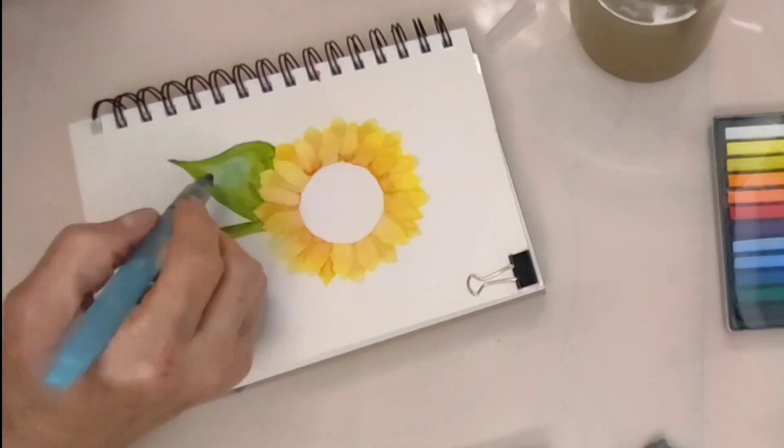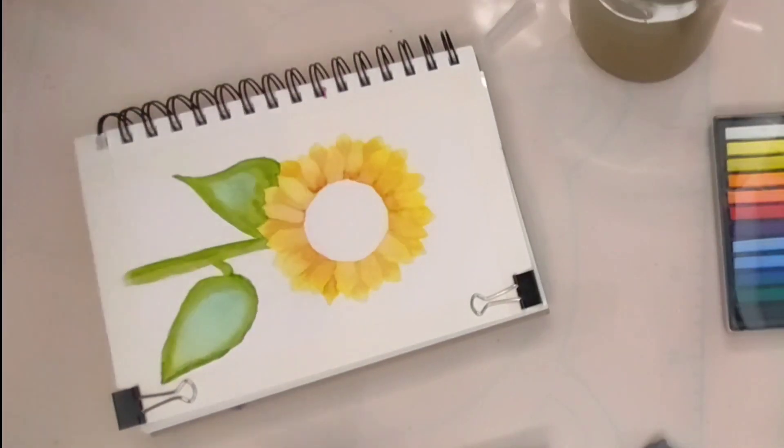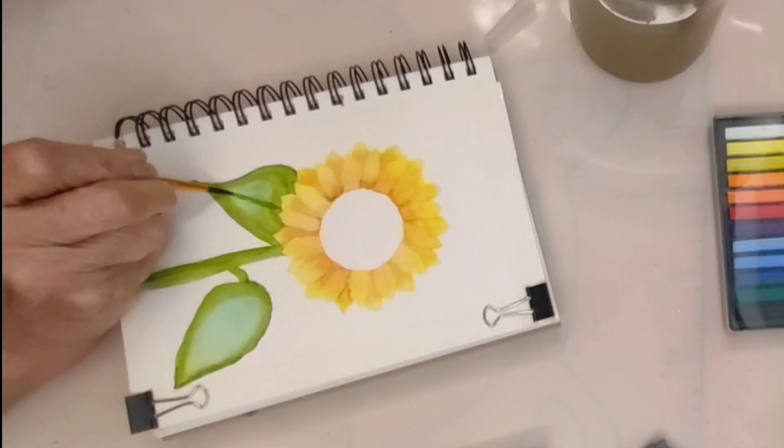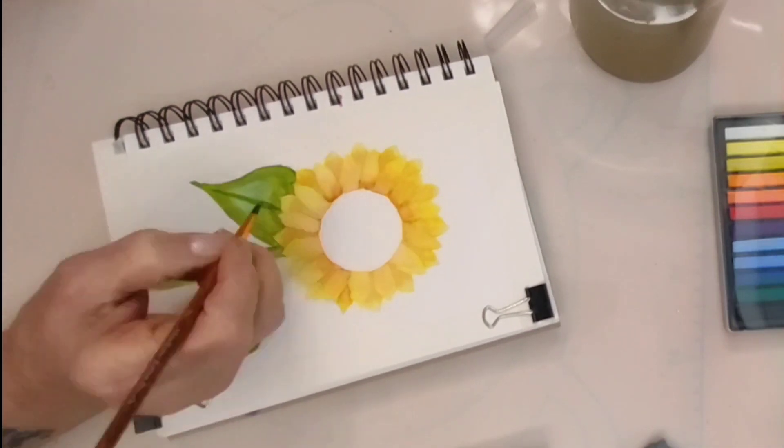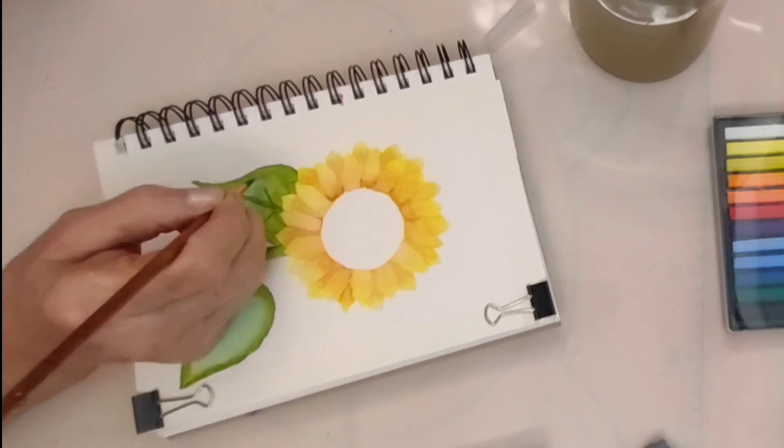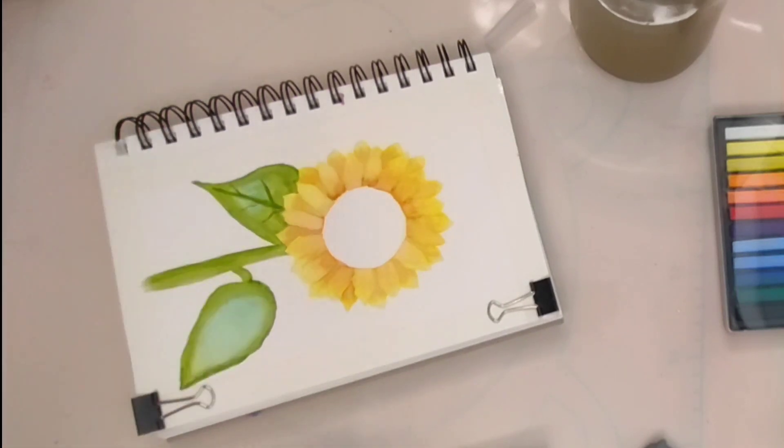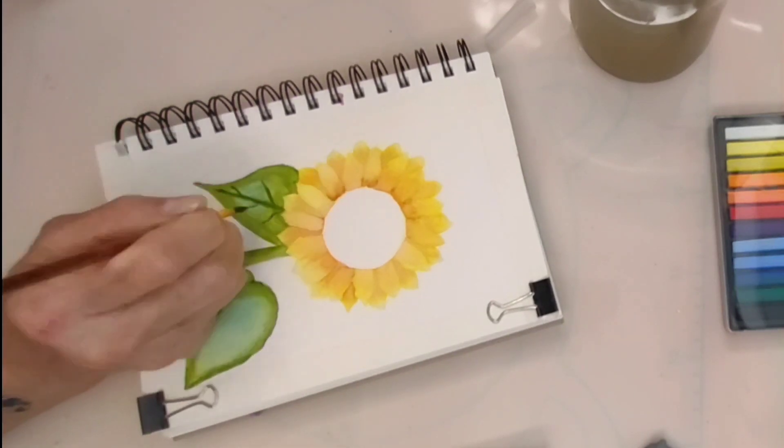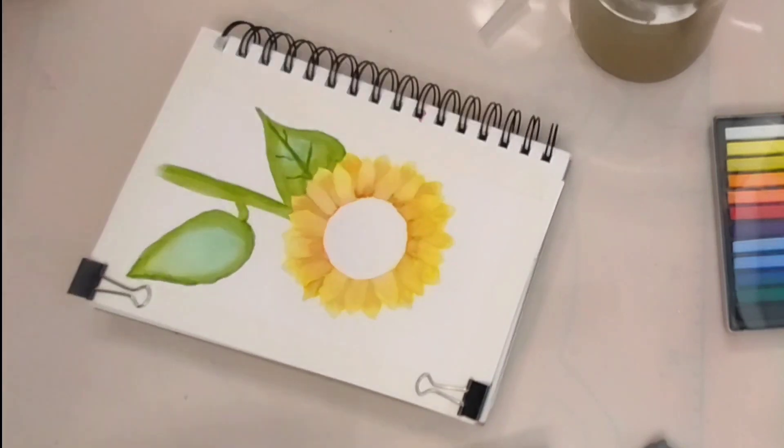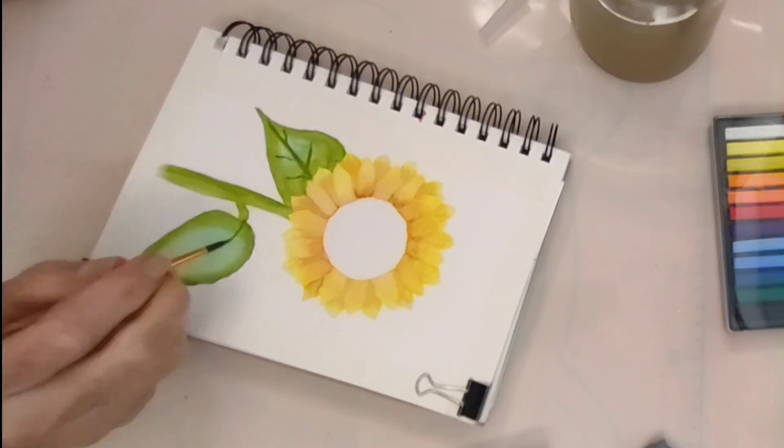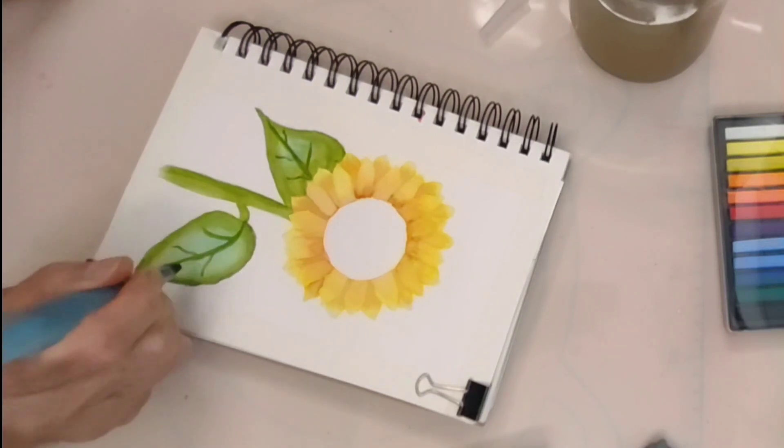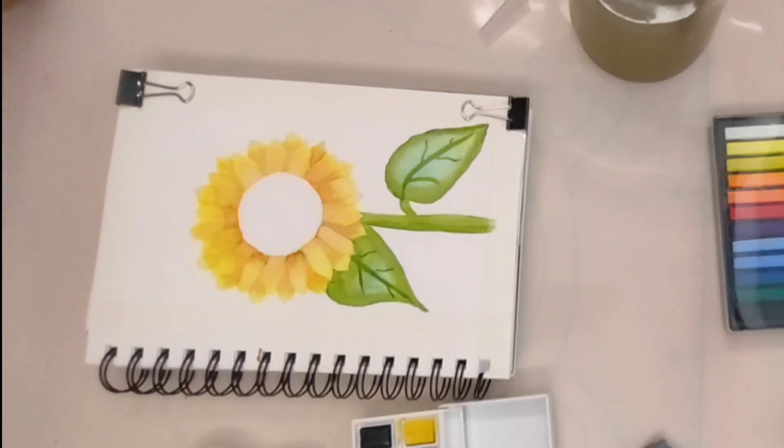Sunflowers have also been featured in numerous poems, novels, and songs throughout history. Their bright and cheerful appearance often serves as a metaphor for happiness, love, and the beauty of nature. Writers and artists have drawn inspiration from sunflower symbolism to convey messages of hope, optimism, and the enduring power of the human spirit.